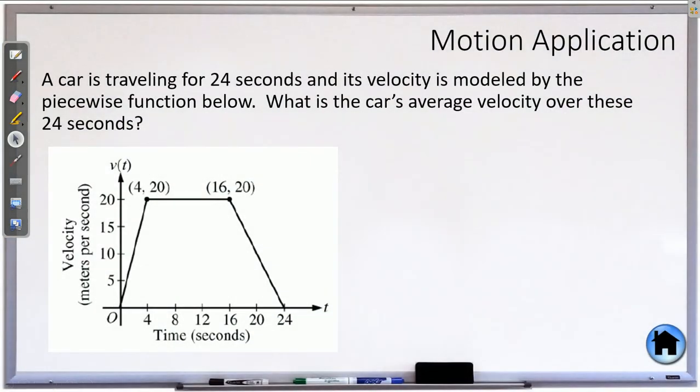A car is traveling for 24 seconds and its velocity is modeled by the piecewise function below. What is the car's average velocity over these 24 seconds? So the average velocity will be the average value of this function, because we are given velocity. So that will be 1 over, how far are we going from 0 to 24? Times the integral from 0 to 24 of this function v(t).